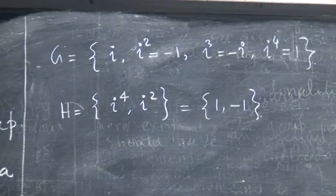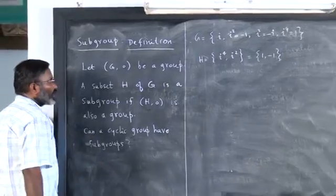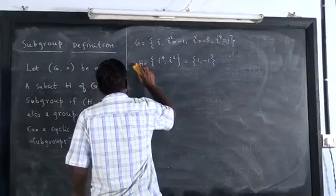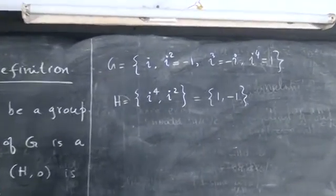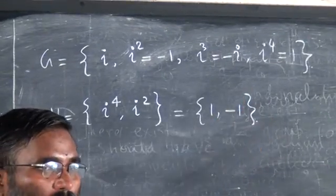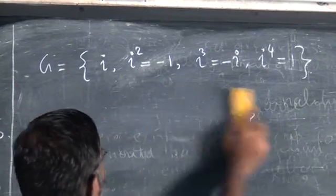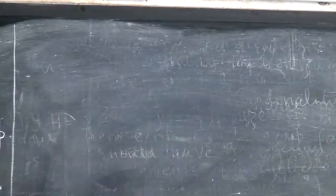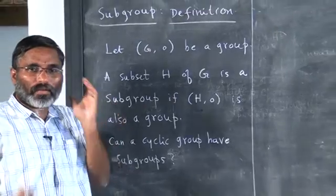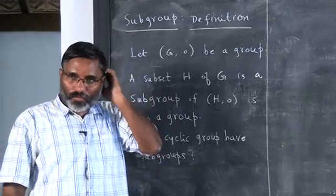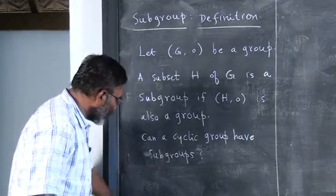I think I cannot make that statement here. This example is a counter-example for what I wrote. The multiplication is fine — you can treat these as complex numbers and multiply. It is not true that all cyclic groups will have only trivial subgroups; there will be some non-trivial subgroups. We will understand which cyclic groups have only trivial subgroups. Let me introduce a couple more concepts first.